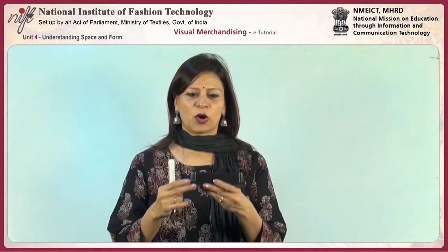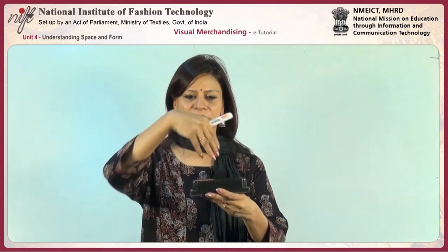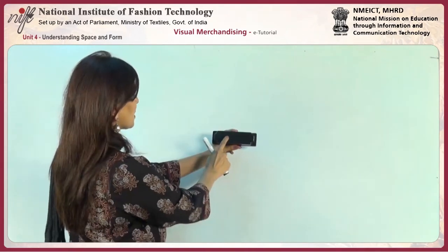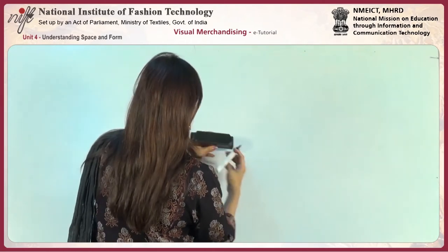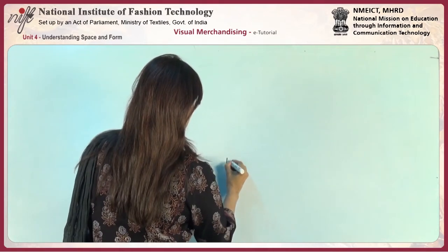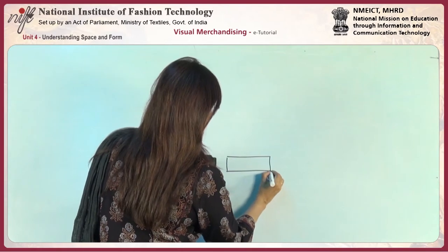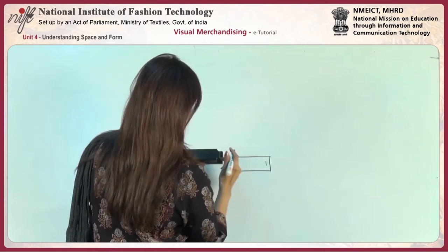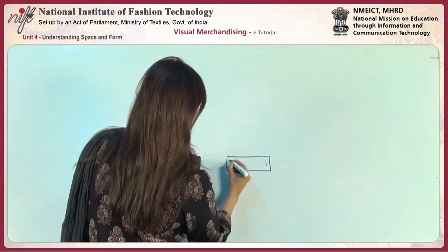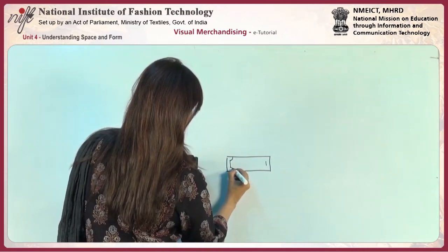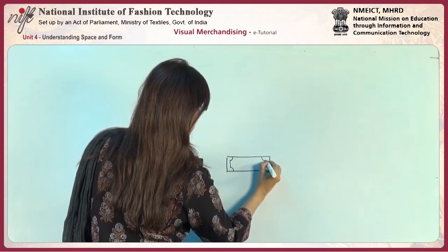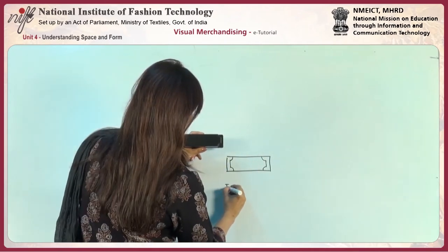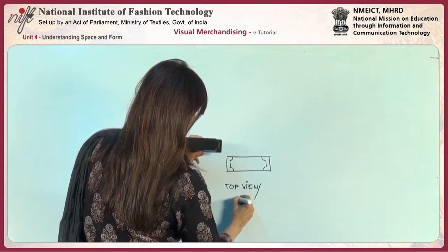Let us understand the orthographic projection for this duster. As mentioned, the three views are the top view, the front view, and the side views. This is our top view — this is how it looks from the top. We take the outer rectangle, and then we have an inner rectangle with a curve at the edge. So this is how our top view of this duster looks. This is our top view, or plan.